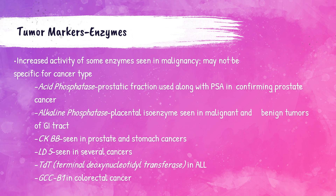Enzymes can also be used as tumor markers, as an increase in enzyme activity can be seen in malignancy. Acid phosphatase can be increased in prostate cancer and benign prostate conditions. Alkaline phosphatase can be elevated in tumors of the gastrointestinal tract. CK-BB can be elevated in prostate and stomach cancers. These are not tests where an elevation automatically means cancer — they are used in combination with the patient's clinical presentation and the physician's assessment to help aid in diagnosis and treatment.